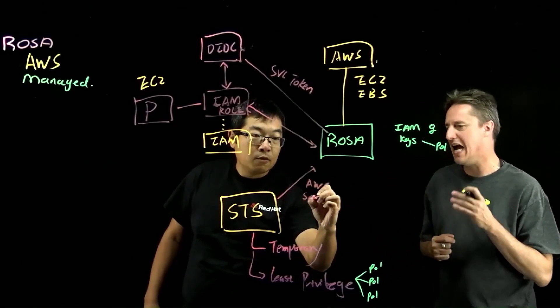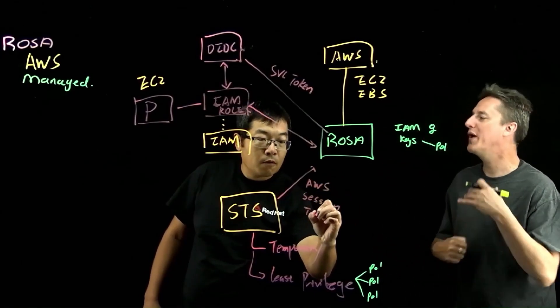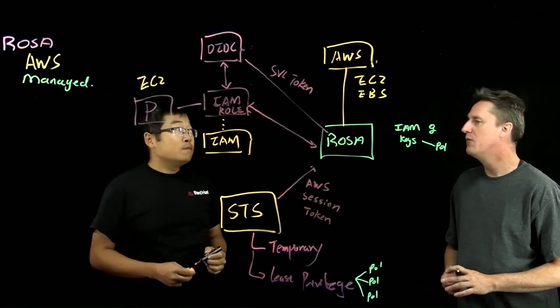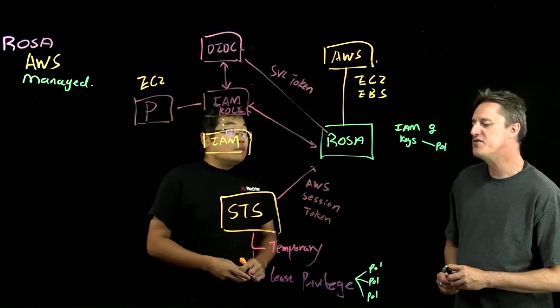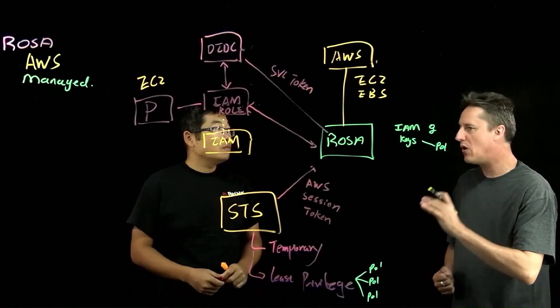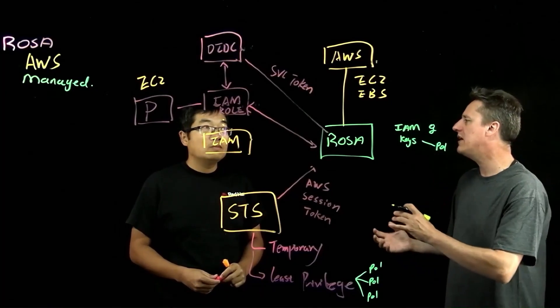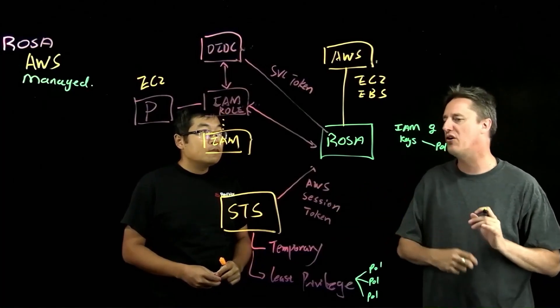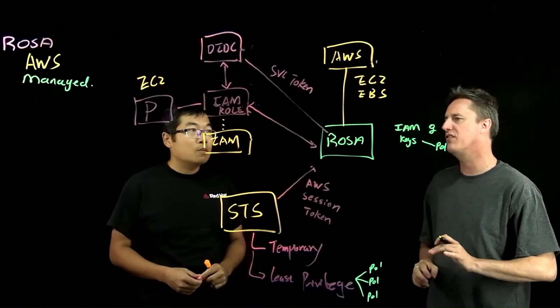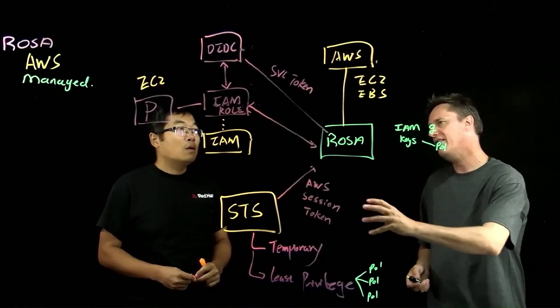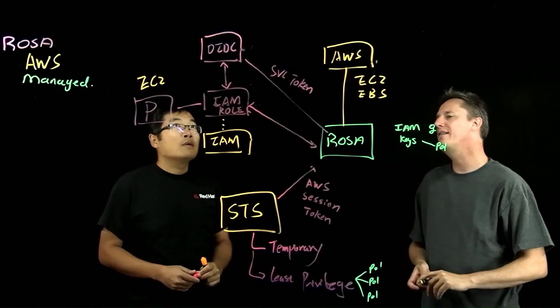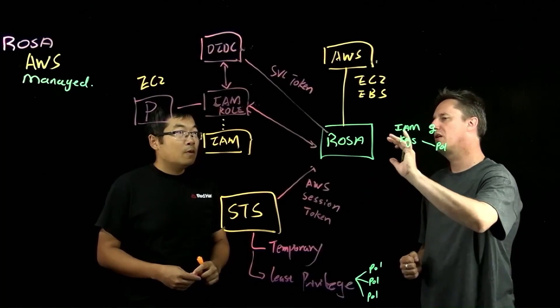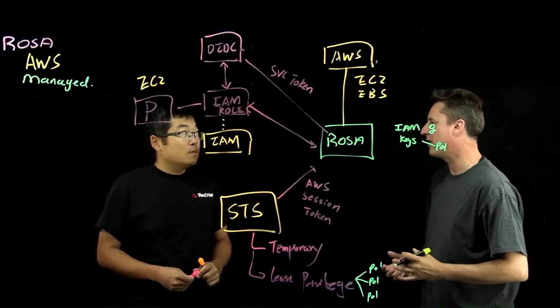So the session token is really how long can I use that assumed role. When it times out, I have to go through this whole request process again. From a least privileged perspective, it's really all of these separate policies per service. So the OpenShift installer, for example, will have a set of permissions that it needs. The machine autoscaler has a separate set of permissions. And all of those are interacting with STS by interacting through that OIDC provider, getting a service token, which then gets me to a session token and allows me to assume that role and use it temporarily.